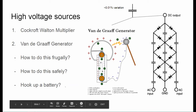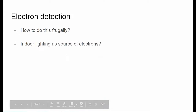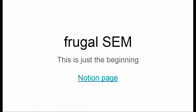We're still trying to figure out how to do this frugally and safely — maybe hooking up a battery in the field to get high voltage. Electron detection is tricky to do frugally because silicon or light detectors are expensive semiconductors. I'm looking at ways like indoor lighting as a source of electrons for our experiments. That was team Frugal SEM. Even though the course is ending, this is just the beginning for this project. Please feel free to visit our Notion page. Thank you.